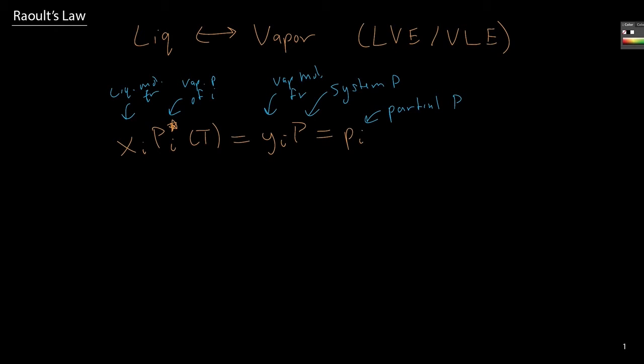So when we deal with multi-component systems, in this case a liquid vapor equilibrium system, generally we will write X_I as referring to the liquid mole fraction. Now in the past when dealing with single component systems or single phase systems, sometimes X_I refers to the mass fraction, but when dealing with multi-component equilibrium, we will always be working in units of mole fraction.